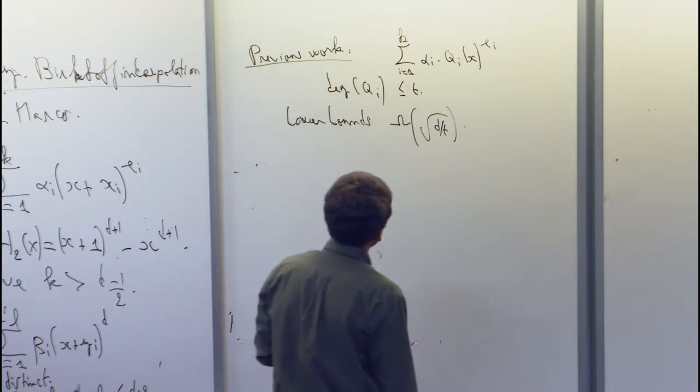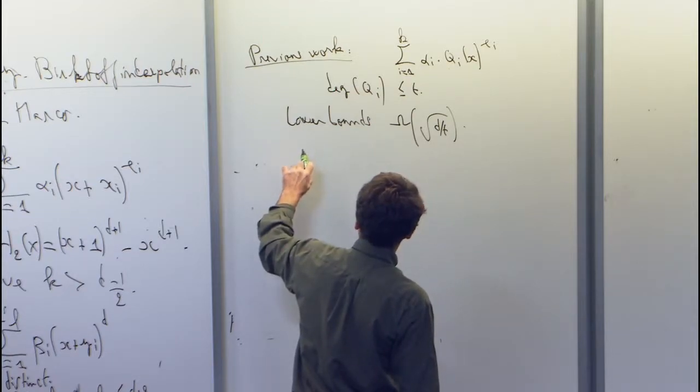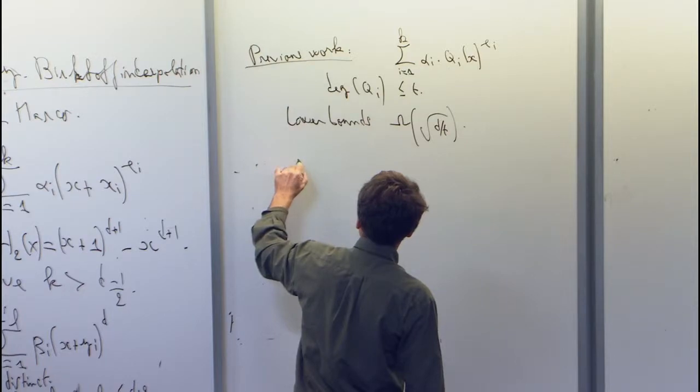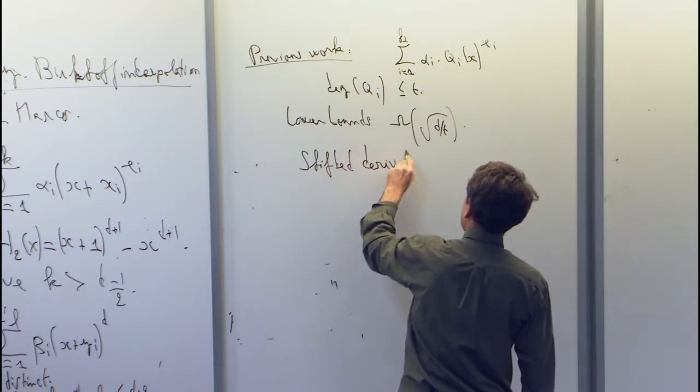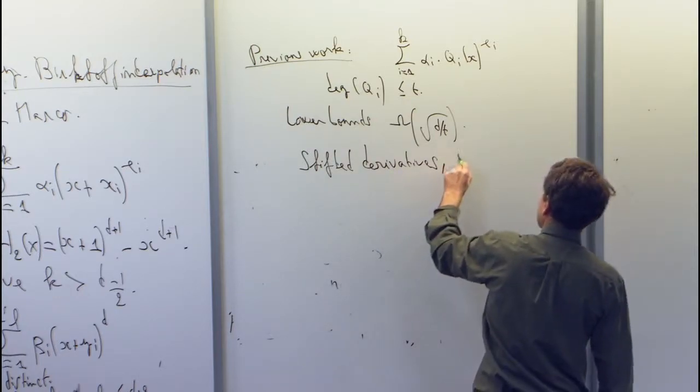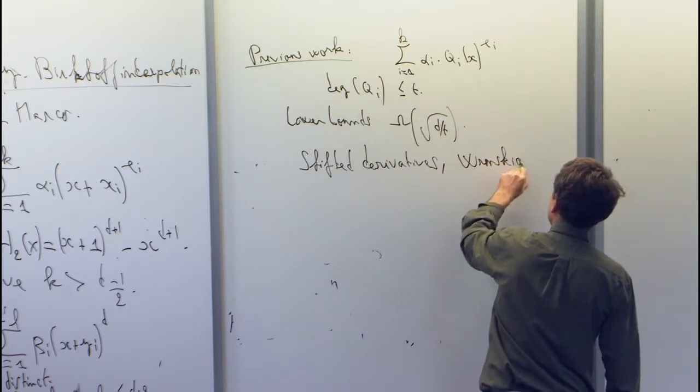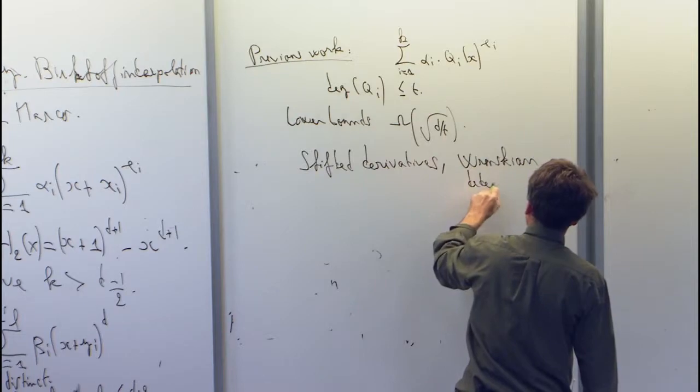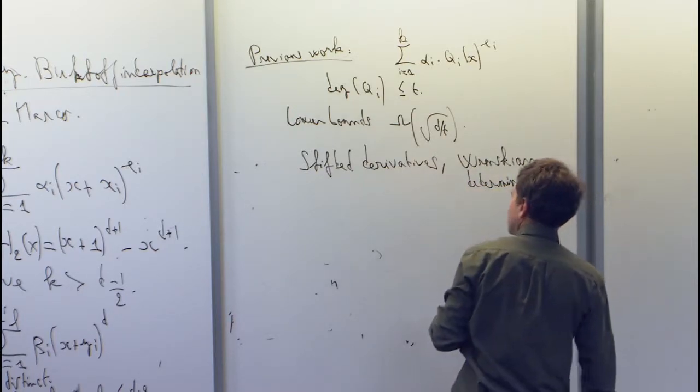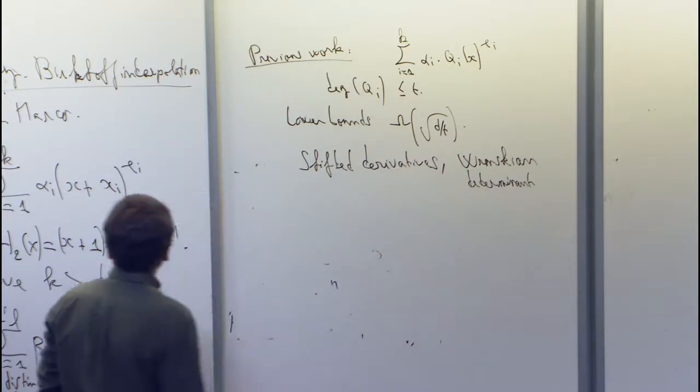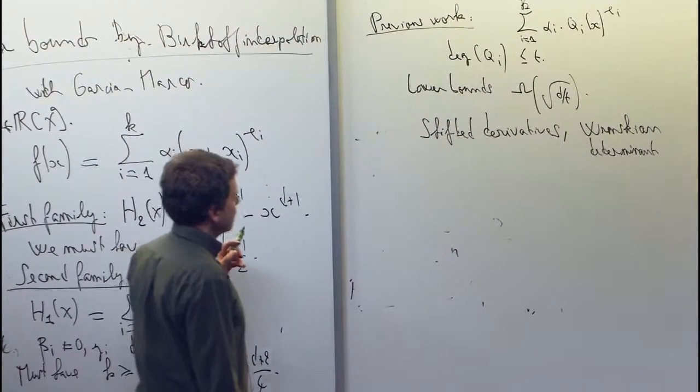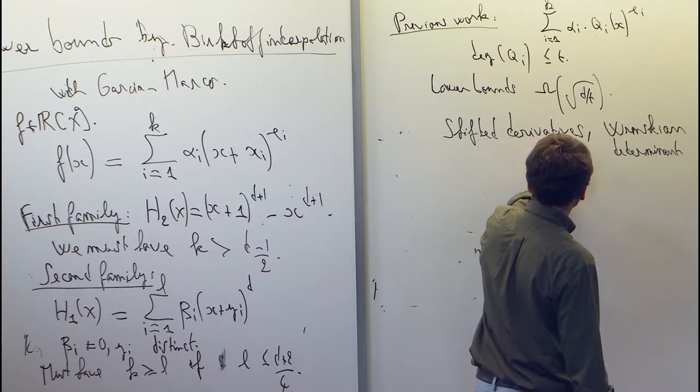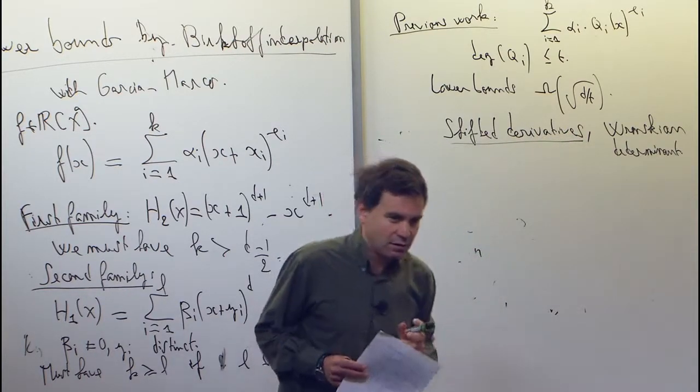And what's the proof method here? So we gave several examples based on either shifted derivatives and also another method based on the Wronskian determinant. So this result here, this model here, is really maybe a toy model, but the exciting thing about it, I think, is that you get a better bound than with shifted derivatives.